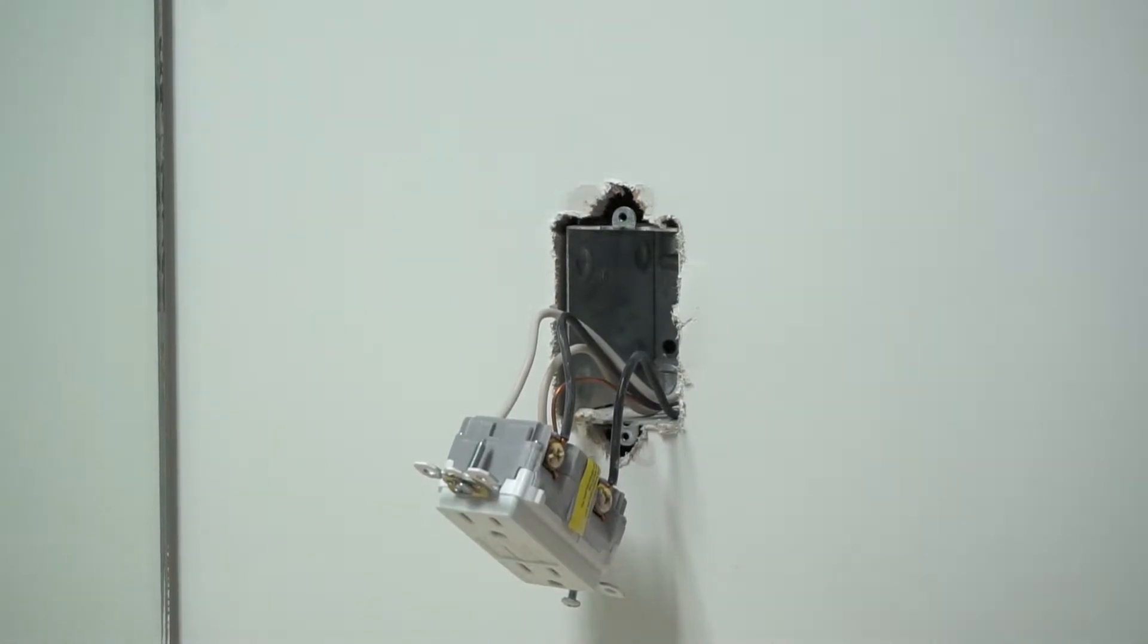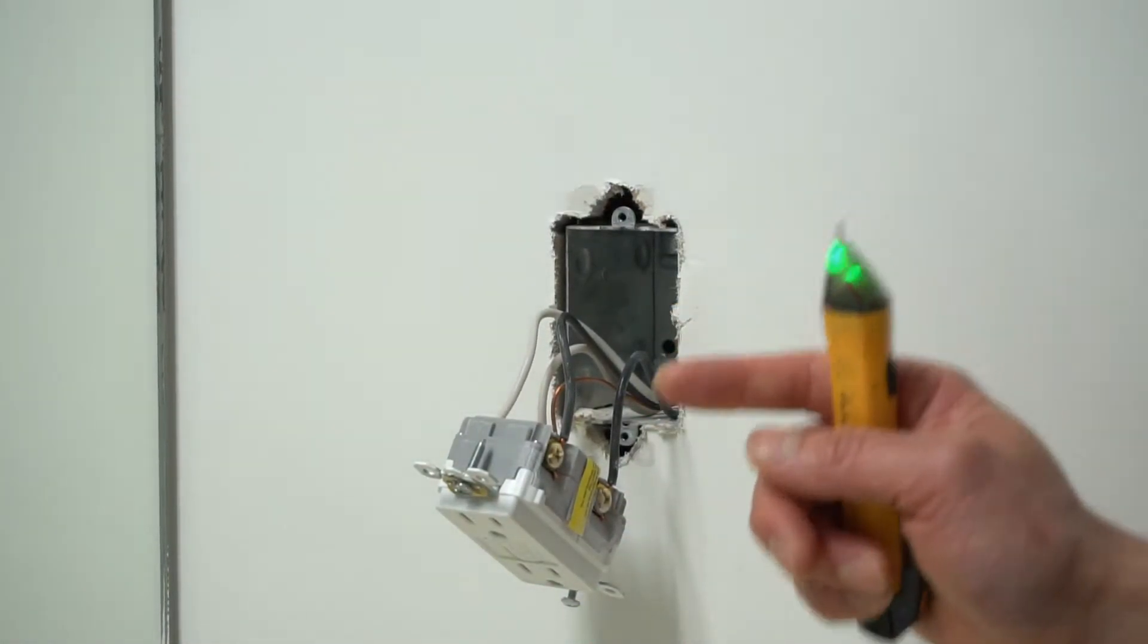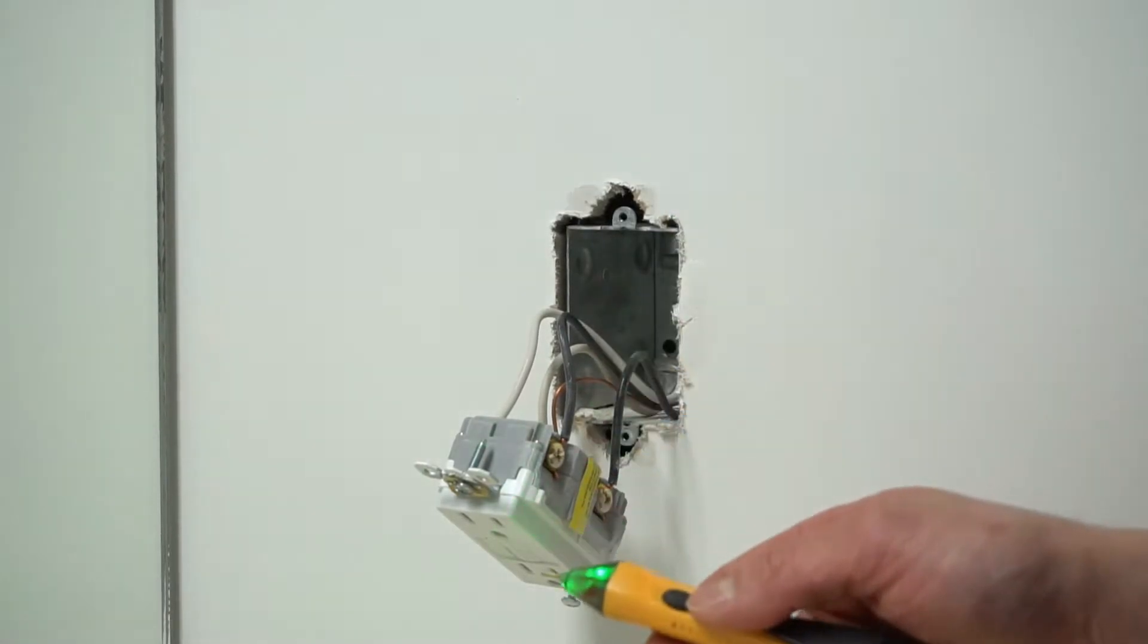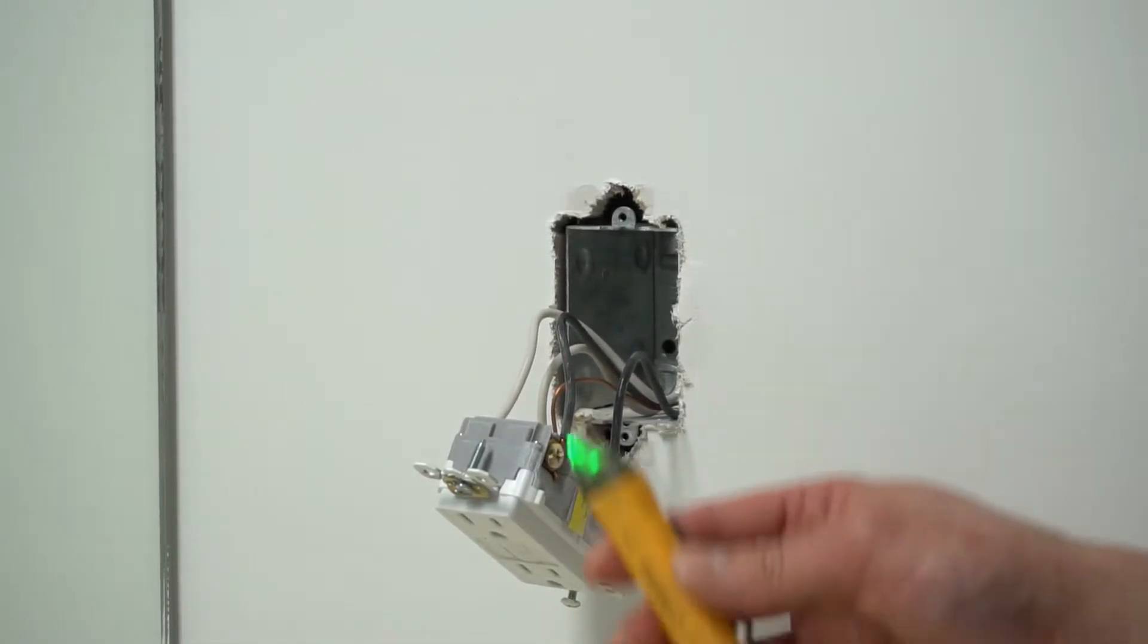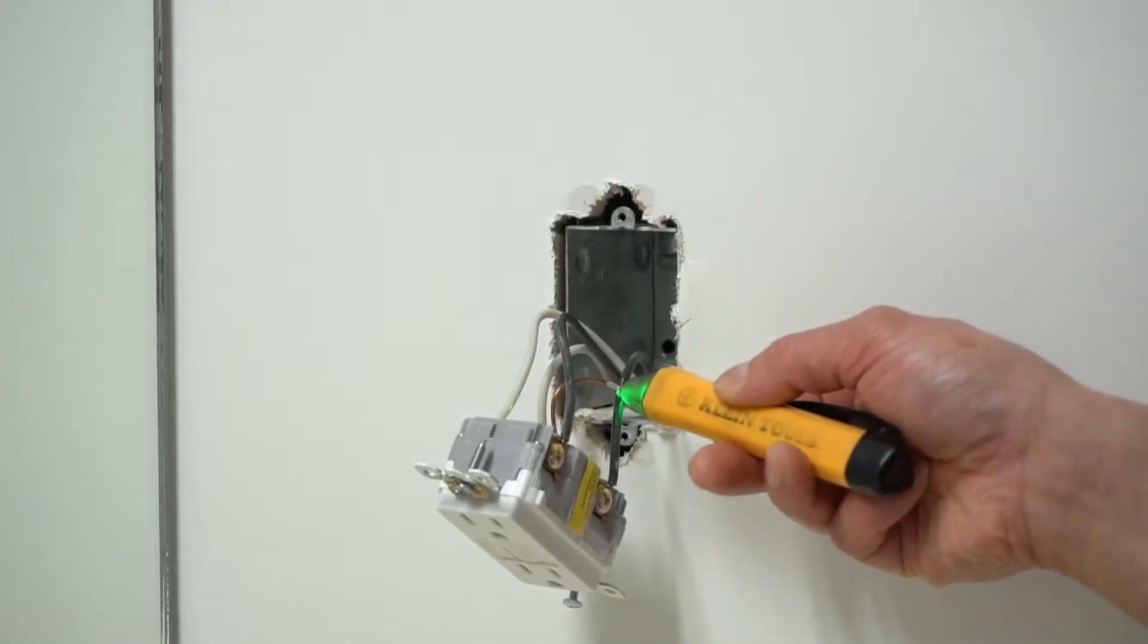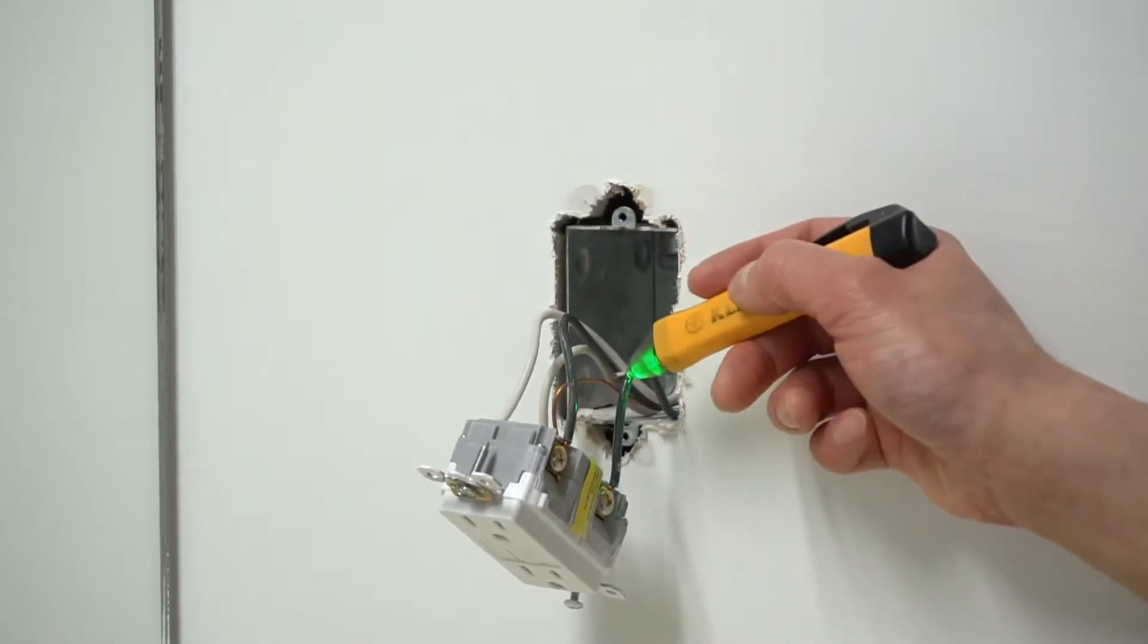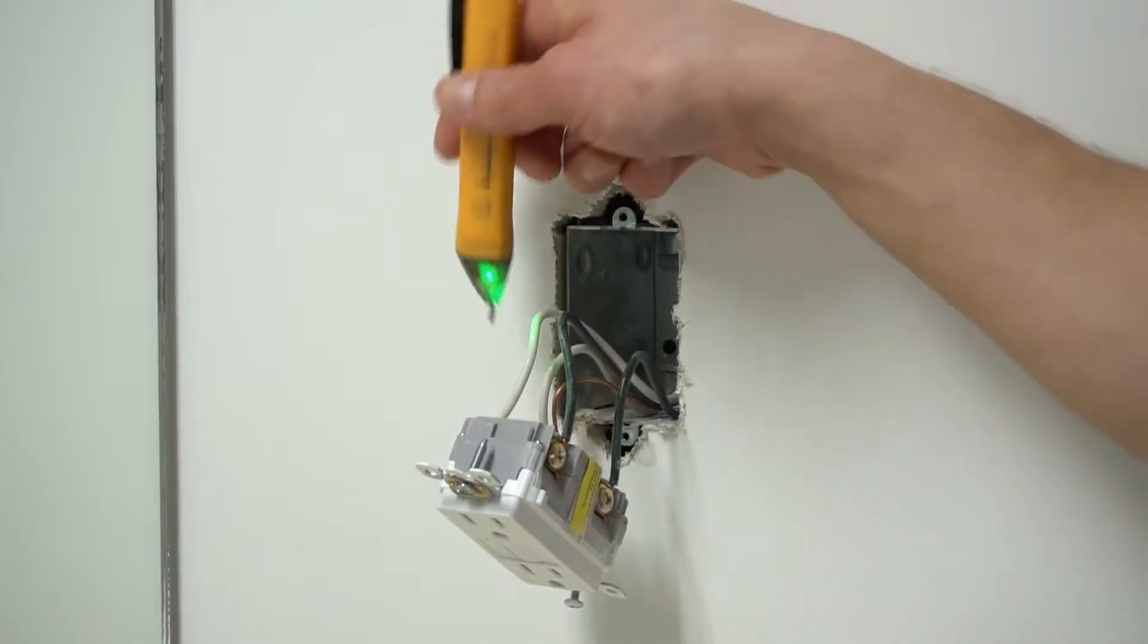Now we'll need a volt tester just to be sure to double check that there is no power. If there's no power, that means this will stay green. And if there is power, this device, this volt tester will flash red. So this is 100% confirmed dead. It's safe to work on.